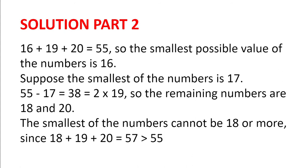What about when the smallest of the numbers is 17? Well, 55 minus 17 is 38, which is 18 plus 20. So the remaining numbers are 18 and 20. The smallest of the numbers cannot be 18 or more, because 18 plus 19 plus 20 is 57, which is greater than 55. And the smallest cannot be 20 or more, obviously, because we've just run out of numbers and the value will be too high.